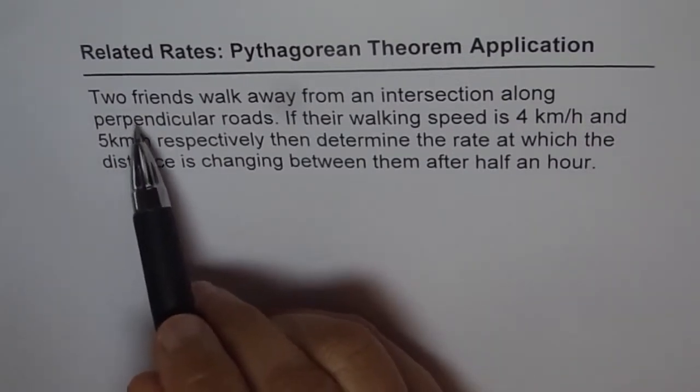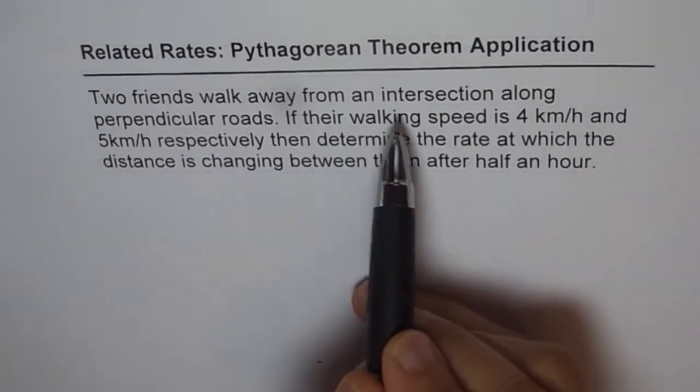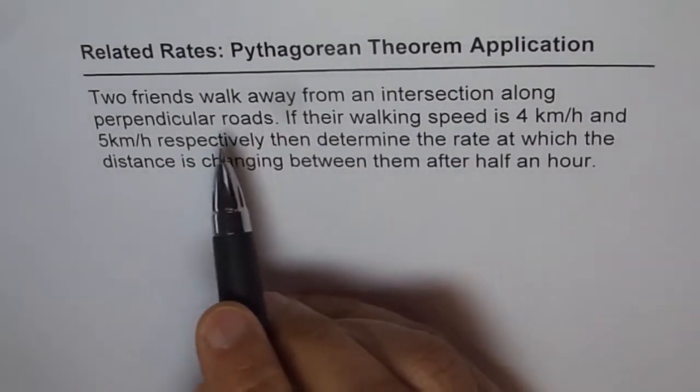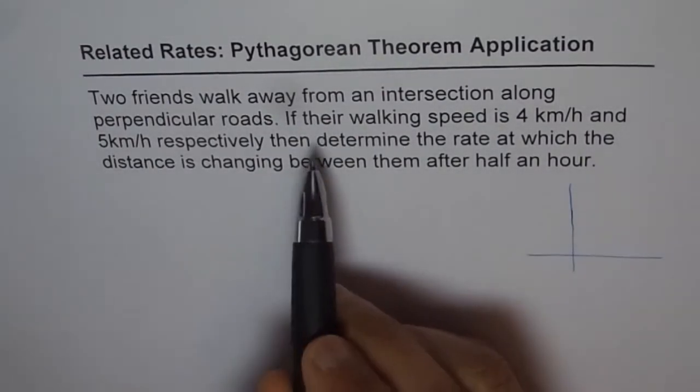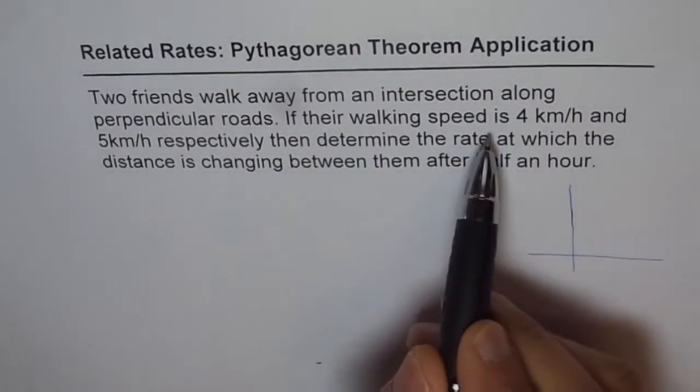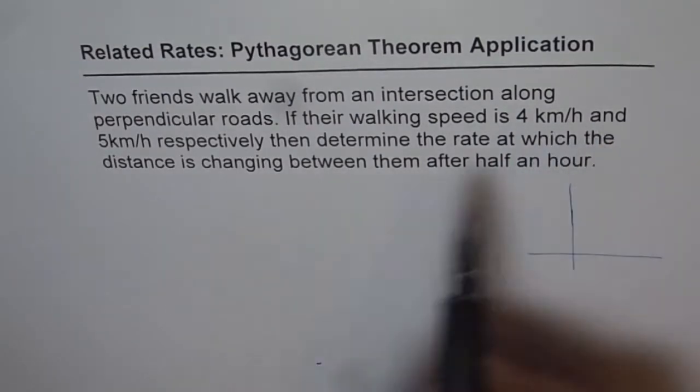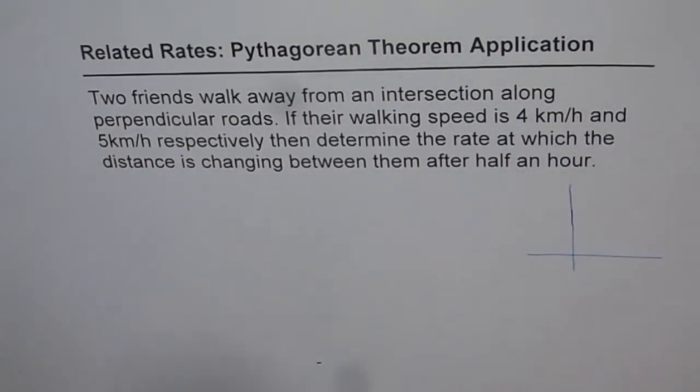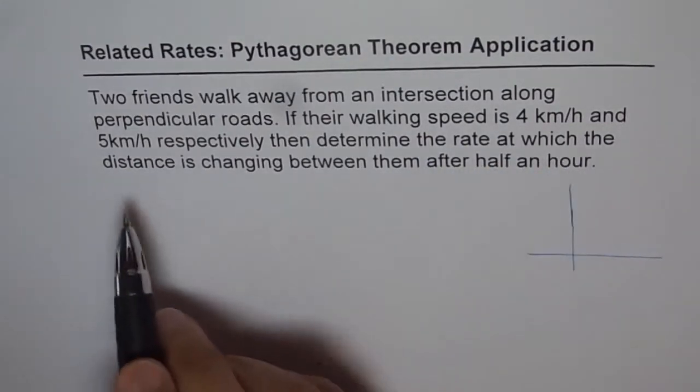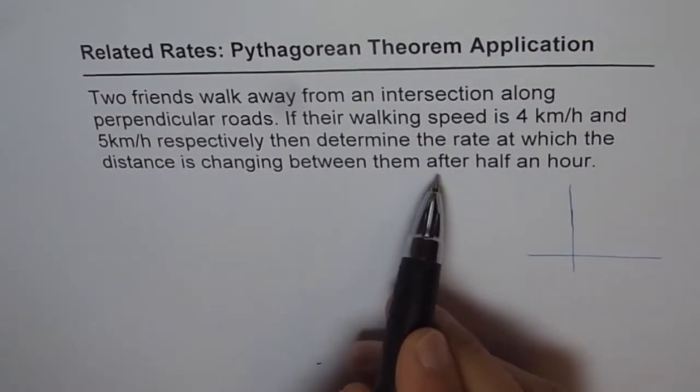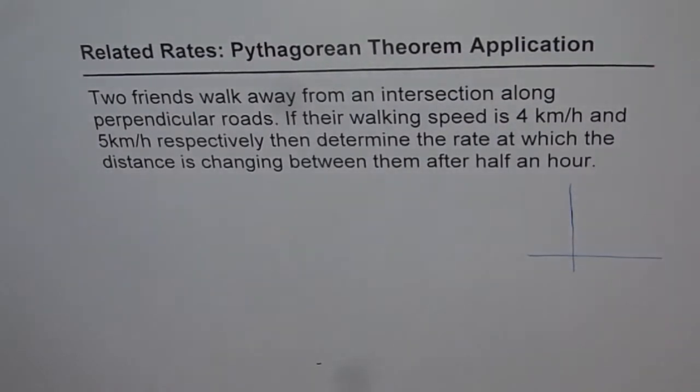Now the question here is, two friends walk away from an intersection along perpendicular roads. If their walking speed is 4 km per hour and 5 km per hour respectively, then determine the rate at which the distance is changing between them after half an hour. So that's interesting.